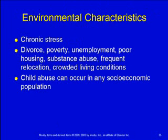Certain environments also increase the likelihood of abuse. Chronic stress — including caring for children with chronic disabilities — raises risk. Divorce, poverty, unemployment, poor housing, parental substance abuse, frequent relocation, and crowded living conditions are all predictors. However, abuse can happen in any socioeconomic status or population — not fitting this picture does not rule out abuse.